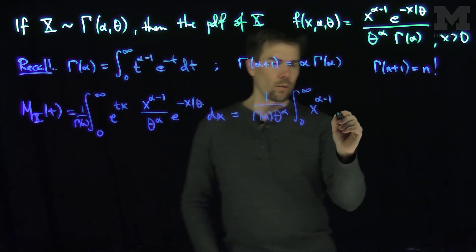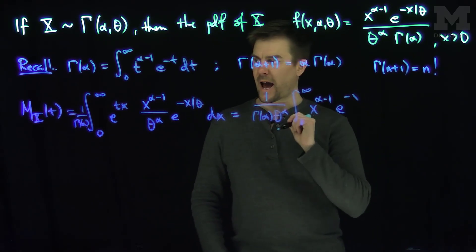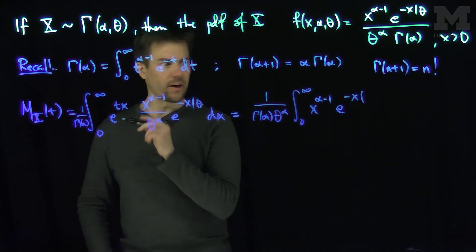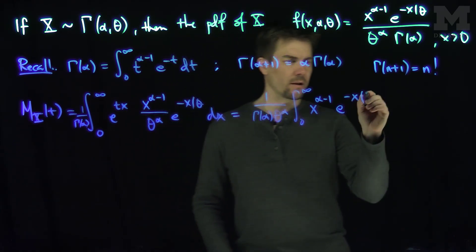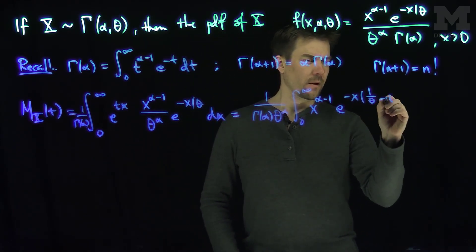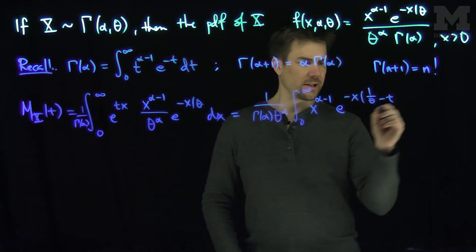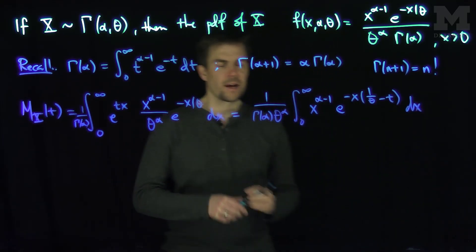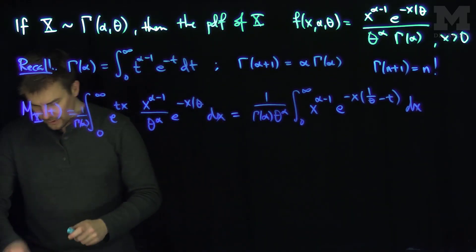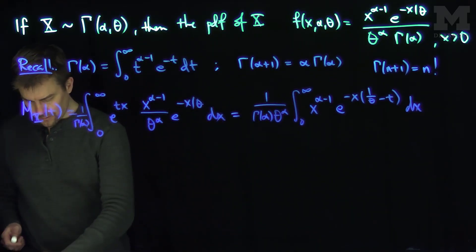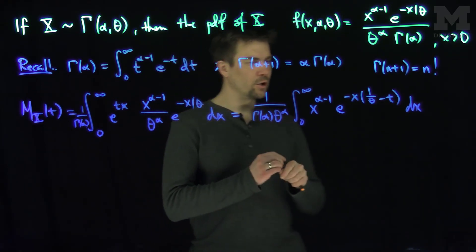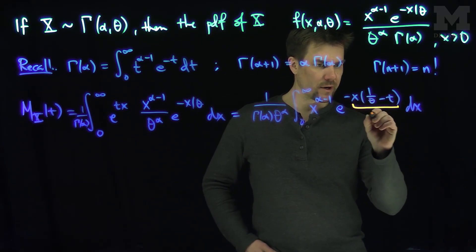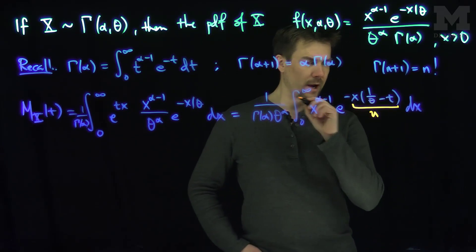Then we'll have e to the negative x times the quantity one over theta minus t. Minus minus turns into a plus, giving us e to the negative x times the quantity one over theta minus t, dx. And now we're going to make a substitution.